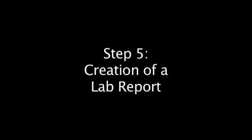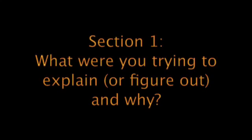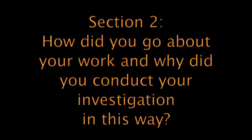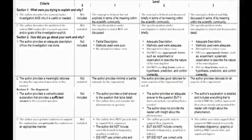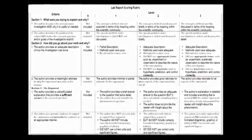Step 5 is creation of a lab report. The investigation report consists of three sections identified by the following questions. Section 1: what were you trying to explain and why? Section 2: how did you go about your work and why did you conduct your investigation in this way? Section 3: what is your argument? The scoring rubric is used to assign points for each section of the lab report, and students should refer to this rubric as they write their lab report.